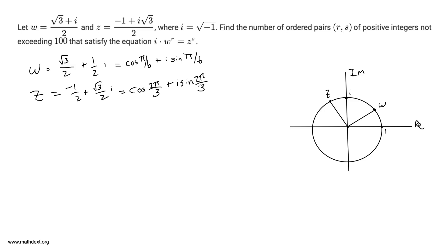So this is how you express w and z in terms of cosines and sines. Another really cool thing is you can write them using Euler's formula: w equals e to the power of i times π/6, and z equals e to the power of i times 2π/3. The angle from the real axis to w is π/6, and the angle to z is 2π/3.